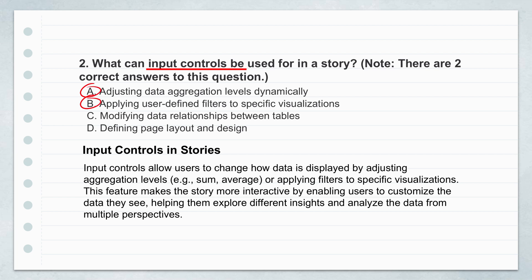And then B, applying user-defined filters to specific visualizations. The designer can add filters beforehand, but input controls are like interactive levers that the user can directly control to focus in on the data that matters most to them at that moment. Say they only want to see sales for a specific region or a certain type of product — input controls let them apply those filters on the fly just by clicking or selecting right there in the story. It makes those reports much more personalized and actionable.